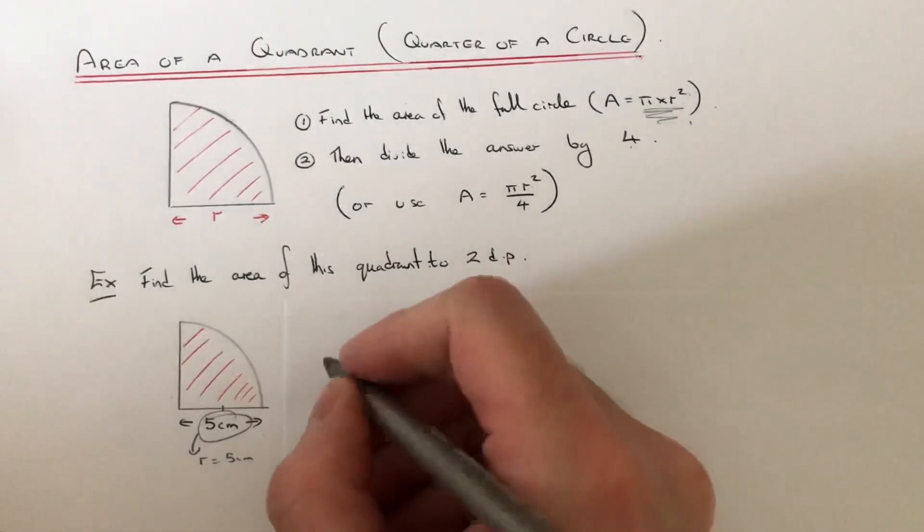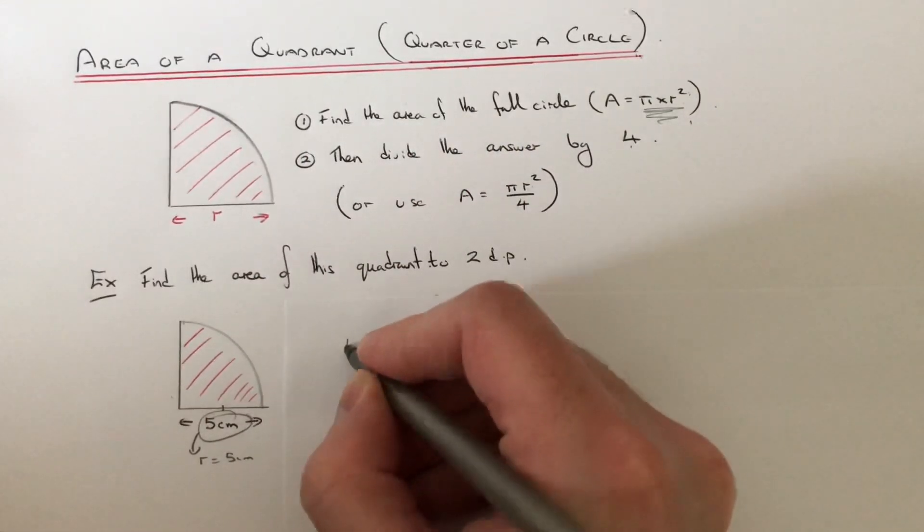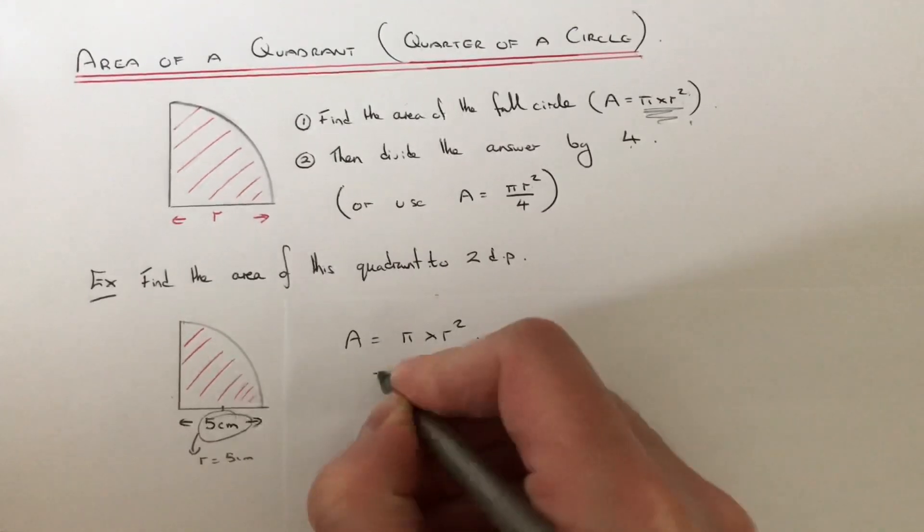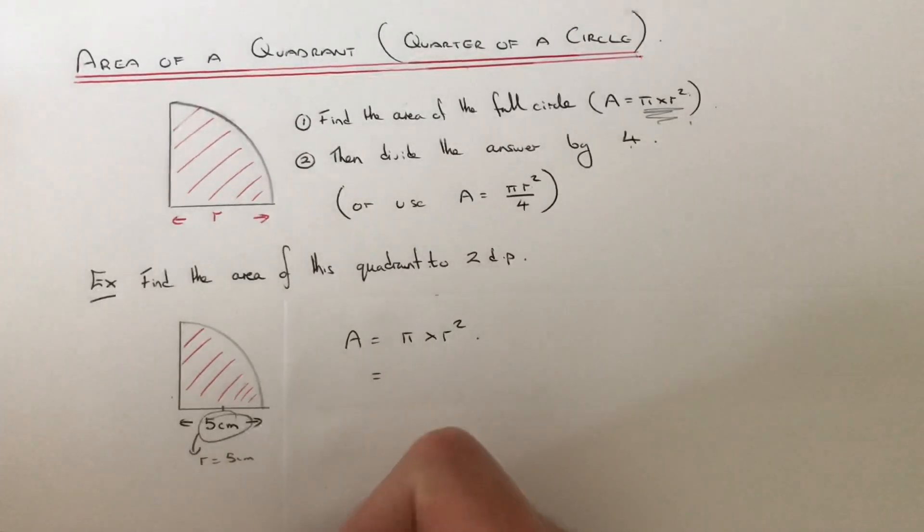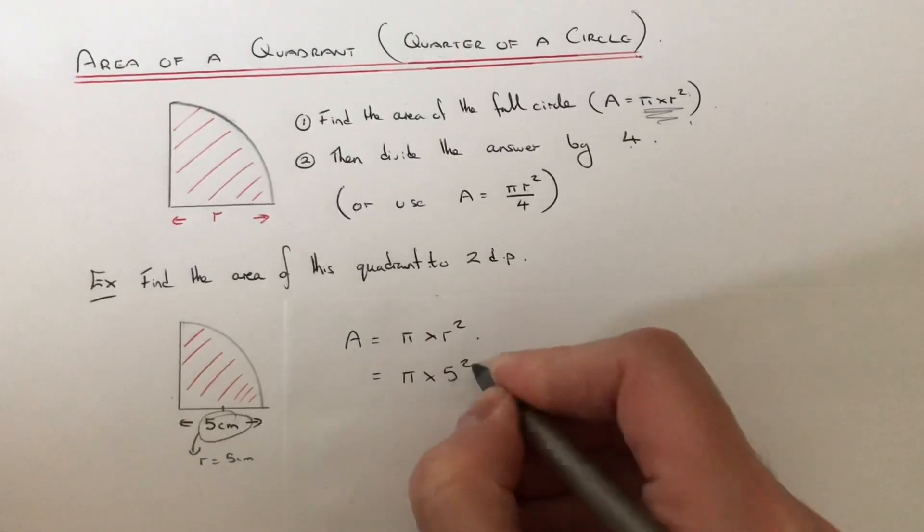So let's do it the first way then. So first we'll calculate the area of the full circle by doing pi times radius squared. So as we said the radius of the circle is 5. So we go pi times 5 squared.